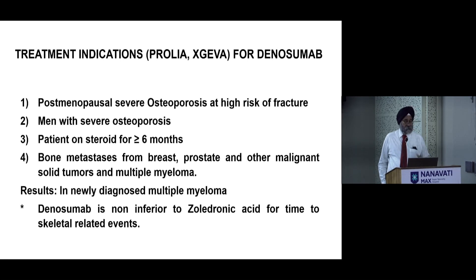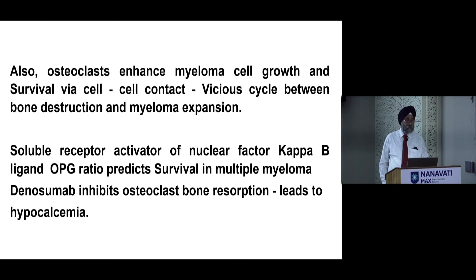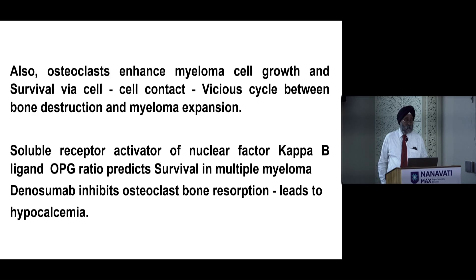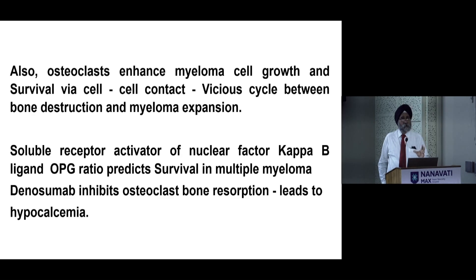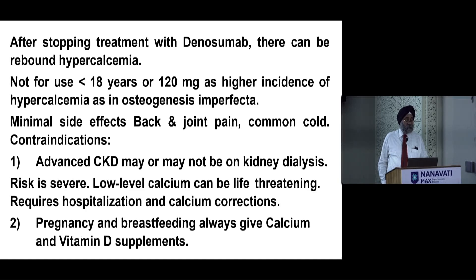Denosumab is also very useful in multiple myeloma. Its target is soluble RANK-B ligand. The key problem is that it can cause hypocalcemia; therefore, before administering denosumab, always check the patient's vitamin D and calcium levels — if they are low, do not give it; correct those levels first. After stopping denosumab, there can be rebound hypercalcemia. Also, if stopped suddenly without transitioning to a bisphosphonate, the effect is nullified within a very short period — approximately three months.